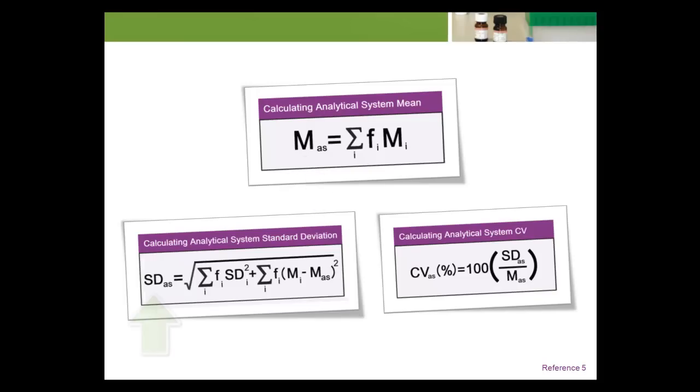MAS, SDAS, and CVAS are the mean, standard deviation, and coefficient of variation for the total analytical system. In these formulas, FI represents the fraction of patient samples tested on the Ith analytical module of the system. MI is the mean level, and SDI is the standard deviation for the Ith module based on repeated testing of a specimen. MI and SDI can be based on quality control data and easily obtained from QC management software.